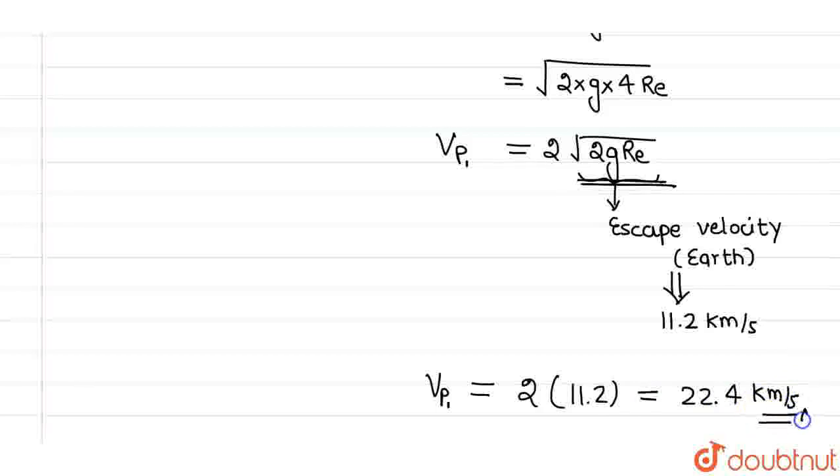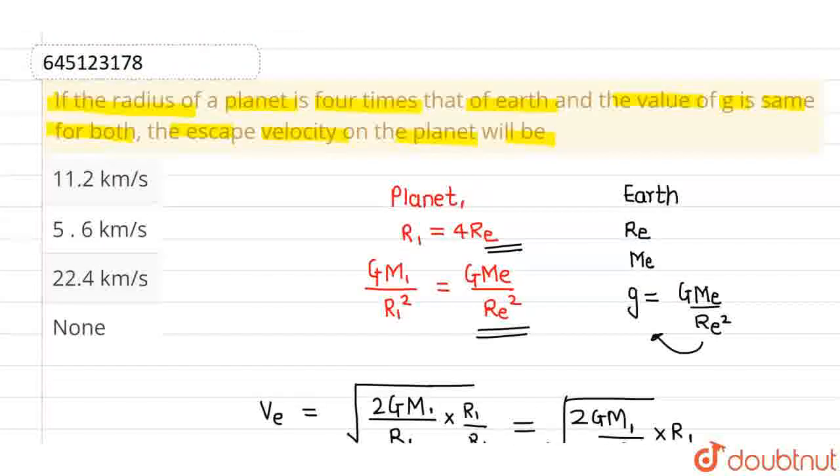This is the escape velocity for planet 1, so the correct option is option 3, which is 22.4, and rest all options are incorrect. I hope you understood, thank you.